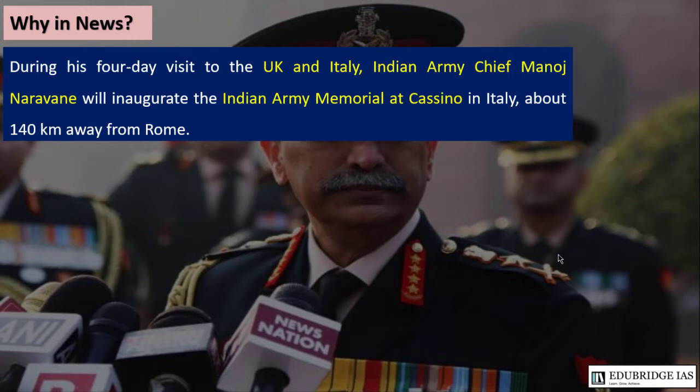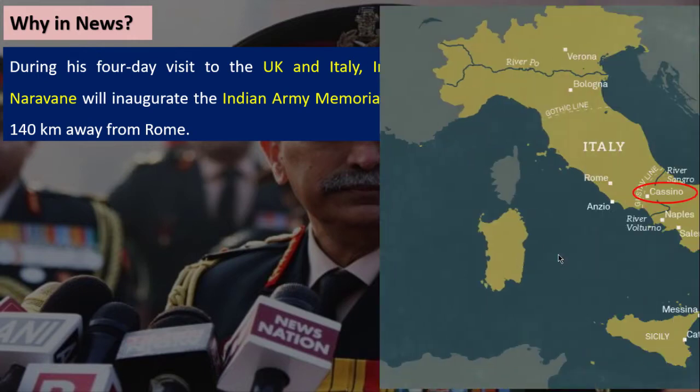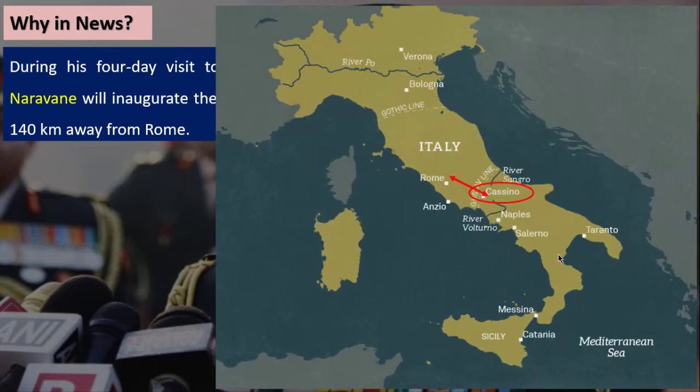Questions about Cassino can be asked in UPSC Prelims in match-the-following type questions. Cassino is in Italy, 140 km away from Rome. River Sangro and River Volturno are located close to Cassino, and questions on both rivers can also be asked. River Sangro drains into the Adriatic Sea and River Volturno drains into the Mediterranean Sea.